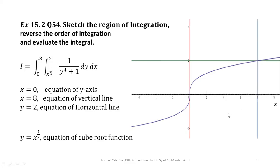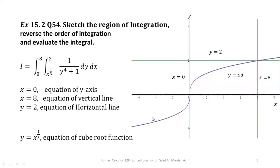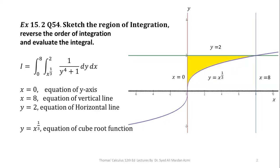In the next step, I have plotted these boundaries. Note that the x-axis is not involved in our boundaries, so I have made it with dotted lines. The y-axis is drawn in red for x equal to 0, y equal to 2 with a green line, x equal to 8 with a blue line, and the cubic function with a purple curve. The only closed region is the yellow region, which is our required region of integration. This concludes the sketching part.